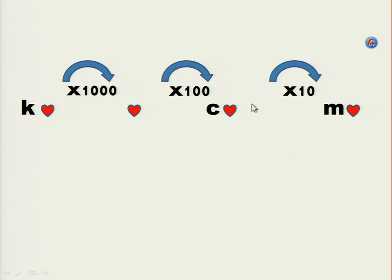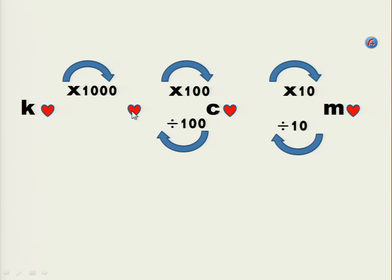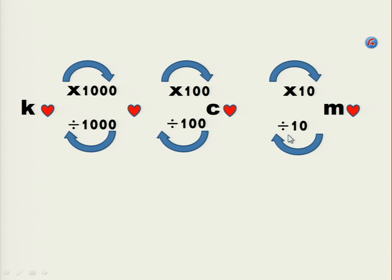If you are moving from the big unit to the smaller side, you always multiply. Moving in the opposite direction — from milli heart to centi heart, the conversion factor is 10; from centi heart to heart, it is 100; and from heart to kilo heart it is 1000. Every step moving from right to left, the factors are ten, a hundred, a thousand — the same values, but when moving from a small unit to a bigger unit, you divide instead of multiply.